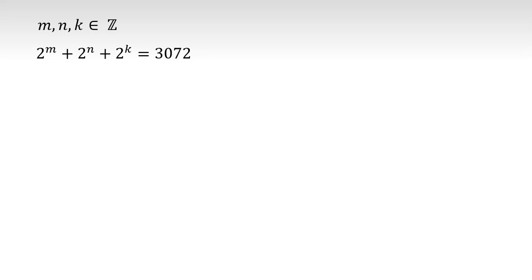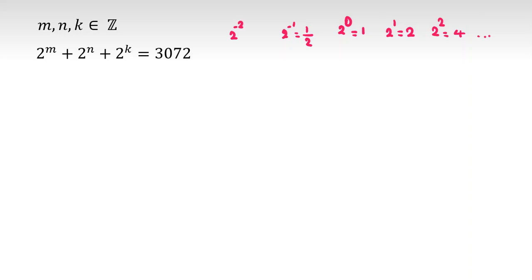If we consider that m, n, k are negative numbers, for example, we know 2 to the 0 is 1, 2 to the 1 is 2, 2 to the 2 is 4. These are integers. But 2 to the negative 1 is a fraction — one half. 2 to the negative 2 is 1 over 4, and so on.